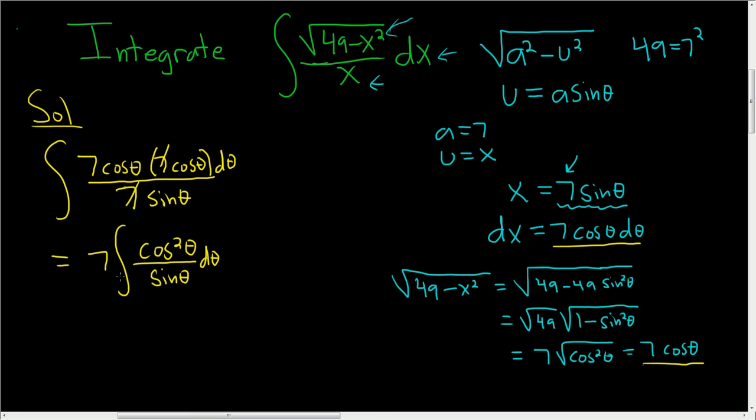It doesn't look like a substitution will work right away. So let's go ahead and try using an identity. We know that cosine squared is 1 minus sine squared. And this is over sine.